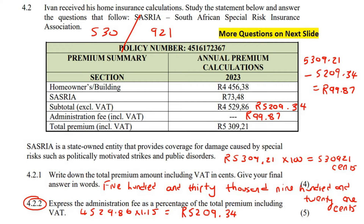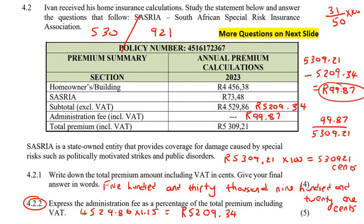So 99.87 is the admin fee. But we're not done — they want us to express the admin fee as a percentage of the total premium. Remember, if you write a test out of 50 and get 31, you put 31 over 50 and multiply by 100. So here: 99.87 divided by 5309.21, multiplied by 100, gives us 1.88%.